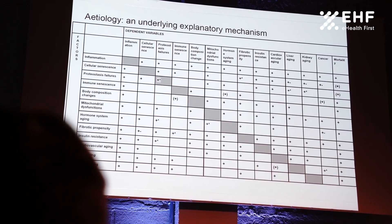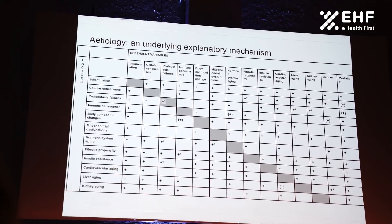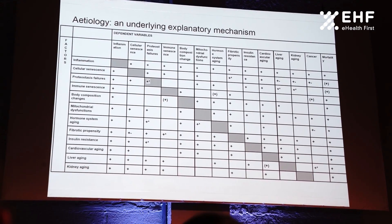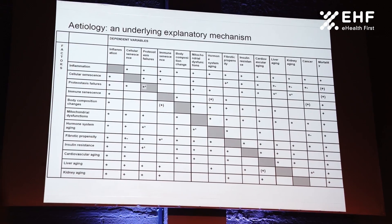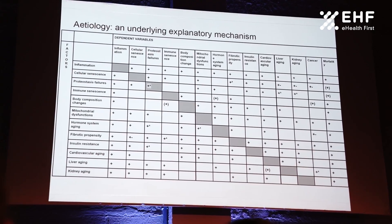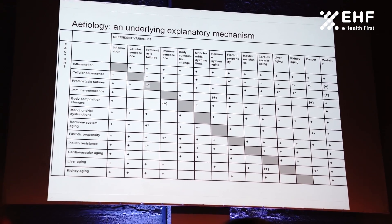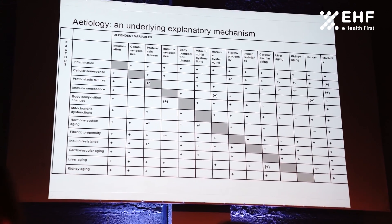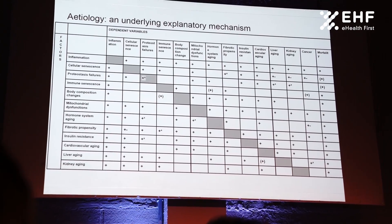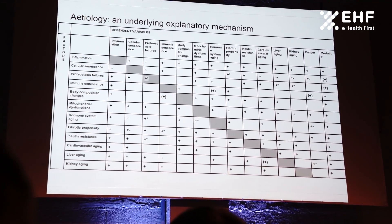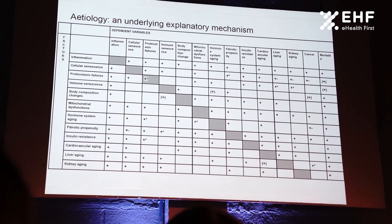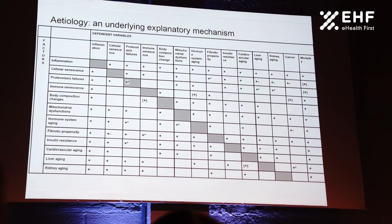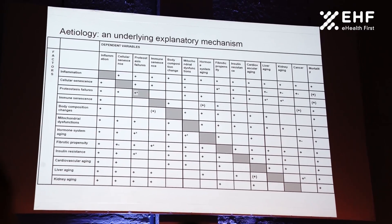Etiology was the hardest component. We screened the medical literature and just couldn't find it described for humans specifically — there was a lot of nice work for animals and general aging, but not for humans. We examined how different organs age and what they have in common: how does the liver age, how does the brain age? We identified something similar to the hallmarks of aging, with some variations. These include inflammation, cellular senescence, proteostatic failures, and body composition changes — less muscle mass, more fat, less functional mass in general.